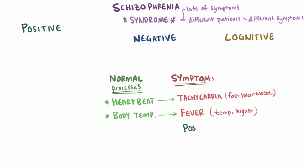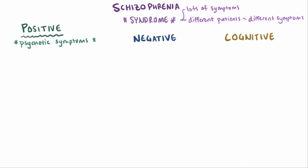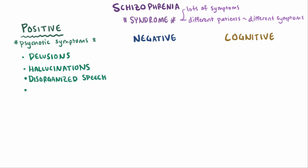In schizophrenia, patients have positive symptoms, which aren't positive in the sense that they're helpful, but positive in the sense that there's some new feature that doesn't have any normal or physiologic counterpart. These are the psychotic symptoms: delusions, hallucinations, disorganized speech, and disorganized or catatonic behavior, none of which occur physiologically.